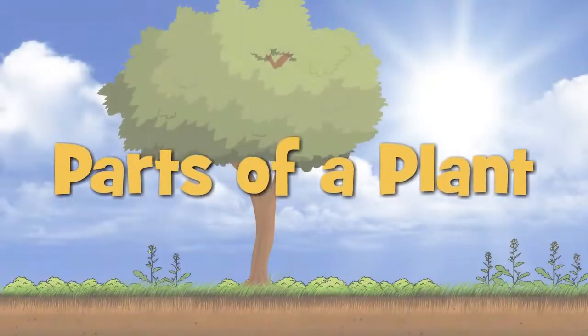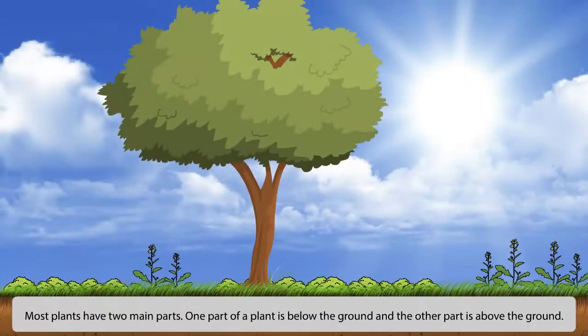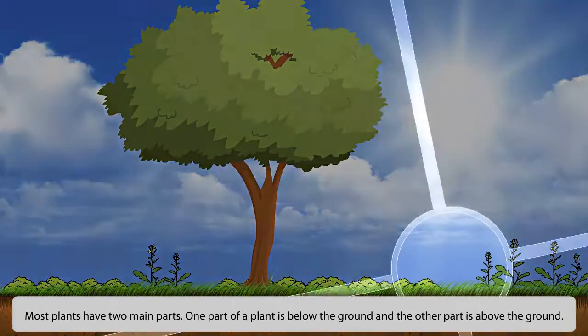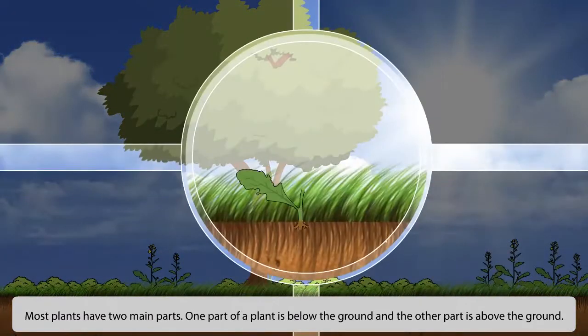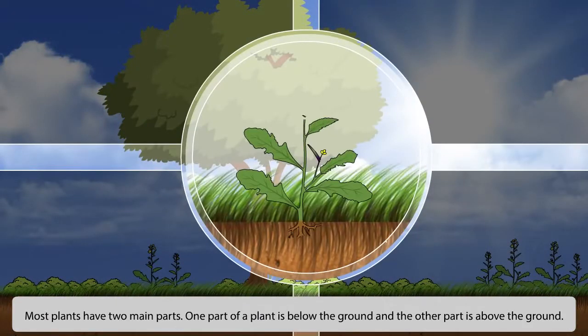Parts of a plant. Most plants have two main parts. One part of a plant is below the ground and the other part is above the ground.